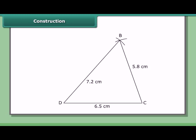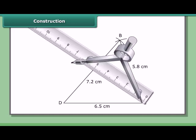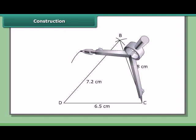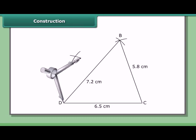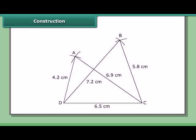Constructing triangle ACD: with C as center and radius 6.9 cm, draw an arc on the same side of DC. With D as center and radius 4.2 cm, draw another arc to cut the previous arc at A. Join CA and DA. Join AB. Then ABCD is the required quadrilateral with diagonals AC and BD.